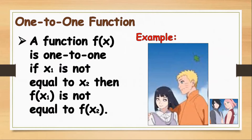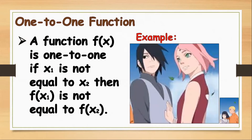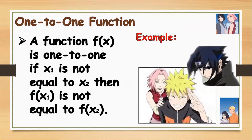Here is another example — because I'm a fan of Naruto, I made this an example. We have Hinata and Naruto paired together, and we also have Sasuke and Sakura paired to each other. So we can say this is a one-to-one function. It's not possible to pair Sakura with Naruto, because Sasuke will be angry. So this will never be a one-to-one function if you try to pair those two.